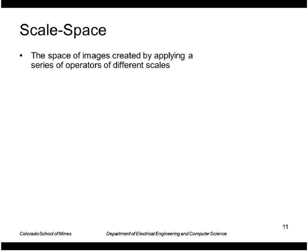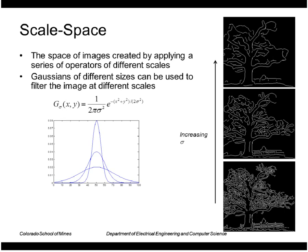It's the space of images created by applying a series of operators at different scales. A Gaussian is a good choice for this operator because it has a tunable parameter sigma, such that we make sigma small, the Gaussian is narrow.